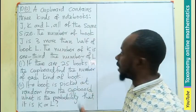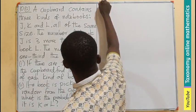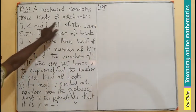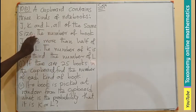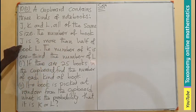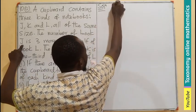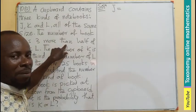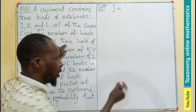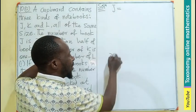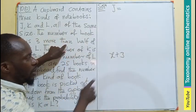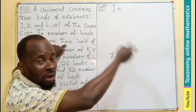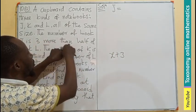We have three books of the same size: J, K, and L. In word problems, 'three more than' simply means add three. So if I say three more than X, it means X plus three. The three is added on to whatever we are referring to.